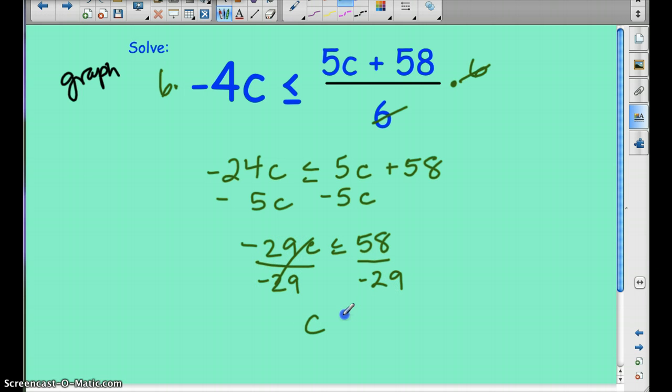So c is greater than or equal to negative 2. When I graph this, I just need three points on my line: negative 2, negative 1, and negative 3. Now it's greater than or equal to—it has a solid line underneath it, so it's going to be a solid point. I'm going to make my arrow point to the right because I want everything greater than negative 2.